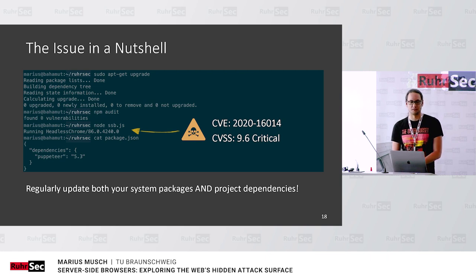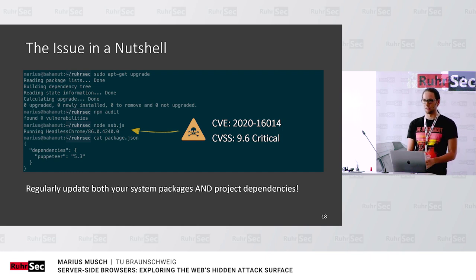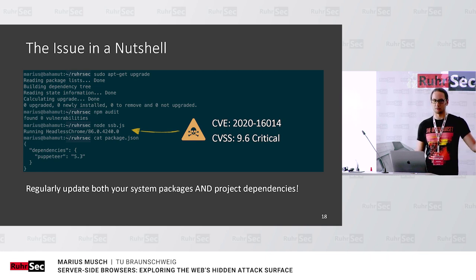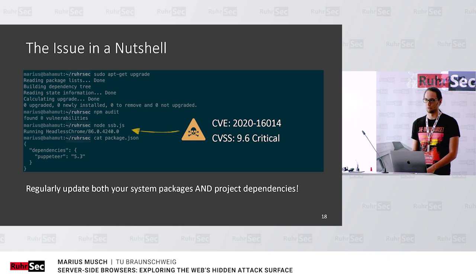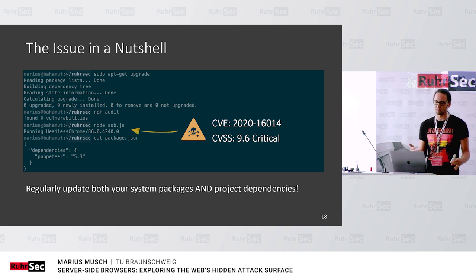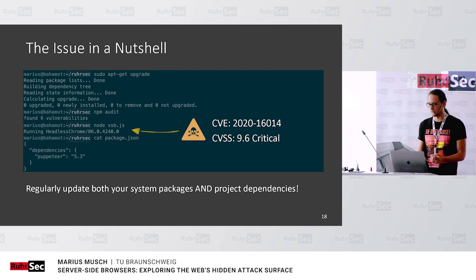One of the main takeaways of this talk: make sure you're not only updating your system packages, but also project dependencies, especially something critical like a browser. What's tricky is that npm audit doesn't catch this — it's not really their responsibility, because there's no vulnerability in the JavaScript code itself. The CVE is assigned to Chromium, not to Puppeteer. You really need to know which Puppeteer version comes with which version of Chromium — so these vulnerabilities are easy to miss.